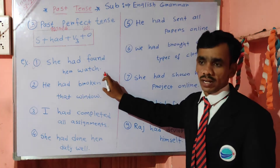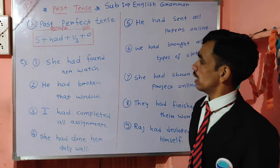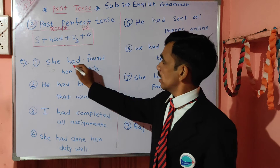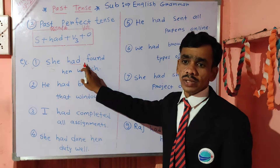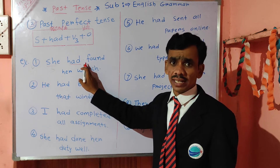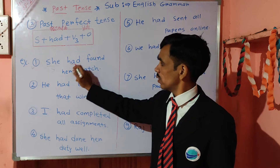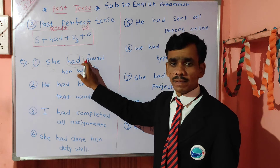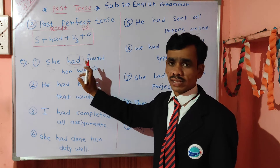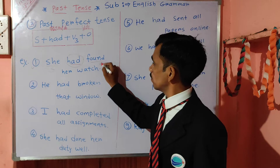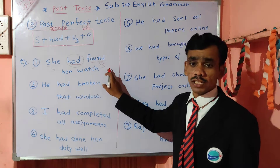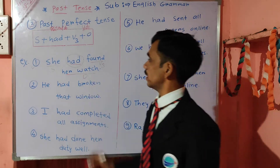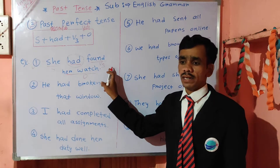So we are going to take an example: She had found her watch. Now she is the subject here. Had is compulsory — only one had is needed. And found is a V3, the past perfect form of the verb. And her watch is the object here. Tila tichi ghadai shaparli hoti.